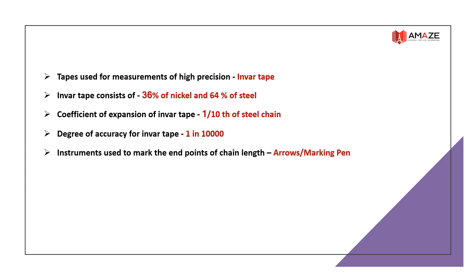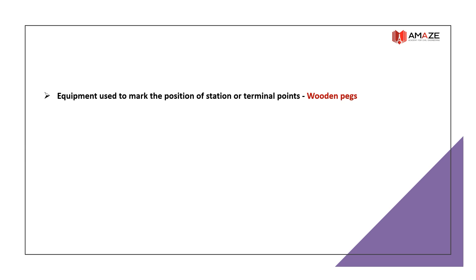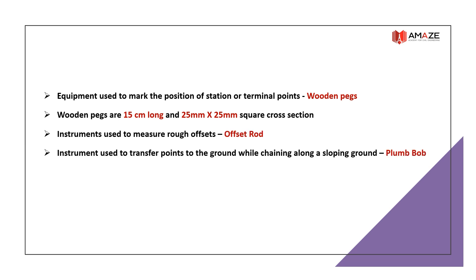Instruments used to mark the endpoints of a chain length are arrows or marking pins. Height of an arrow is 40 cm, and 10 arrows are supplied with each chain. Equipment used to mark the position of stations or terminal points are wooden pegs — 15 cm long with a 25 mm × 25 mm square cross section. Instrument used to measure rough offsets is an offset rod. Instrument used to transfer points to the ground while chaining along sloping ground is a plumb bob.